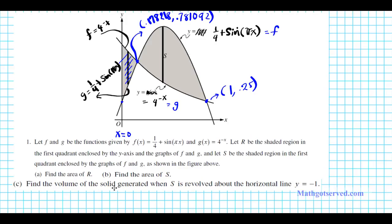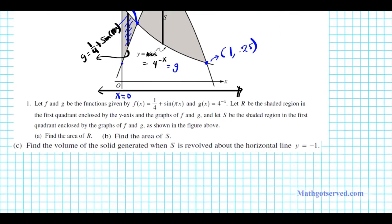For part C, find the volume of the solid generated when S is revolved about the horizontal line y = −1. Since the axis of rotation is horizontal, we're rotating in the direction of the X axis. The line y = −1 is underneath both functions for region S. Since the axis of rotation is beneath both functions and we're going up and down, we know which formula to use. The standard volume formula is pi times the integral from A to B of (outer radius squared minus inner radius squared) dx.